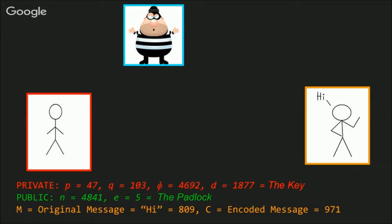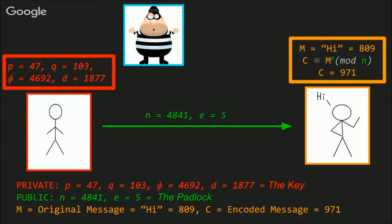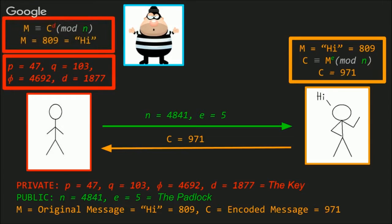So now let's go over the last example using a diagram. First, we calculate all the private numbers, P, Q, φ, and D, and send our friend the public numbers, N and E. Our friend will use those, along with his original message M, to calculate C, the encrypted message. And they'll send that back over the internet to us. We'll take the encrypted message and decrypt it using D. And we'll get back the original message M.